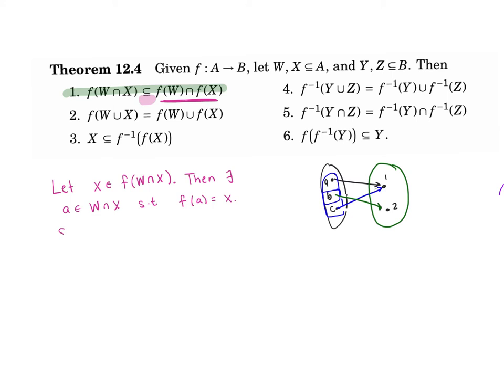What does it mean to be in the image? It means you get mapped to by something in that set. So there's some a that maps to x. But now I just need to show that I'm in each of these images. So since a is in W ∩ X, a is in W and a is in X. Since a is in W, then f(a), which is equal to x, is in f(W).